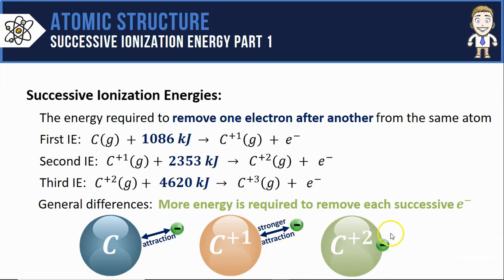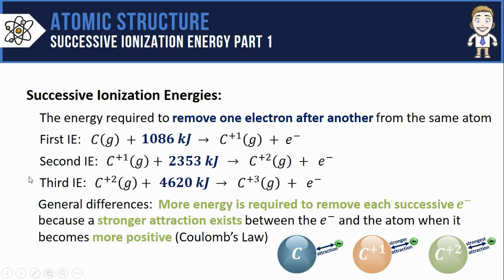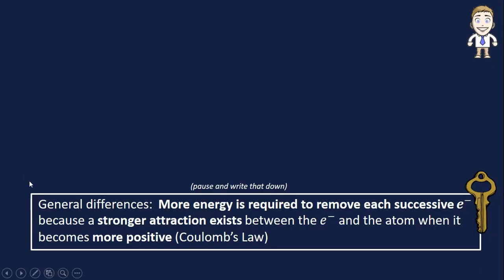And that effect continues if you imagine trying to remove an electron from a carbon atom that now has a plus two charge. That has the largest charge magnitude, so it would have the strongest attraction and the most energy would be required to remove it. We can summarize these differences by saying that more energy is required to remove each successive electron because a stronger attraction exists between the electron and the atom as the atom becomes more positive. That's another one of our key ideas for the video.